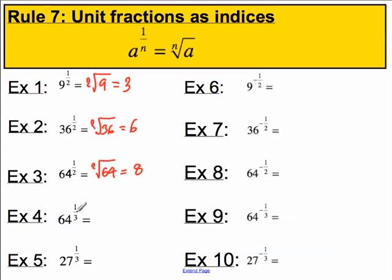Now, sixty-four to the one over three. This is equal to the cube root of 64. You need to ask yourself, what number multiplies by itself three times to get 64? The answer, with some thought, must be four, because four times four is 16, times another four is 64.